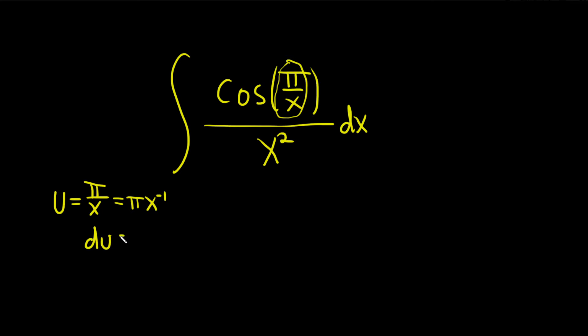So du is equal to, the pi hangs out because it's a constant, and then you take the negative and you put it in the front. This is negative pi x to the, and then you just subtract one from the exponent. That's the power rule, and then we put our dx here.